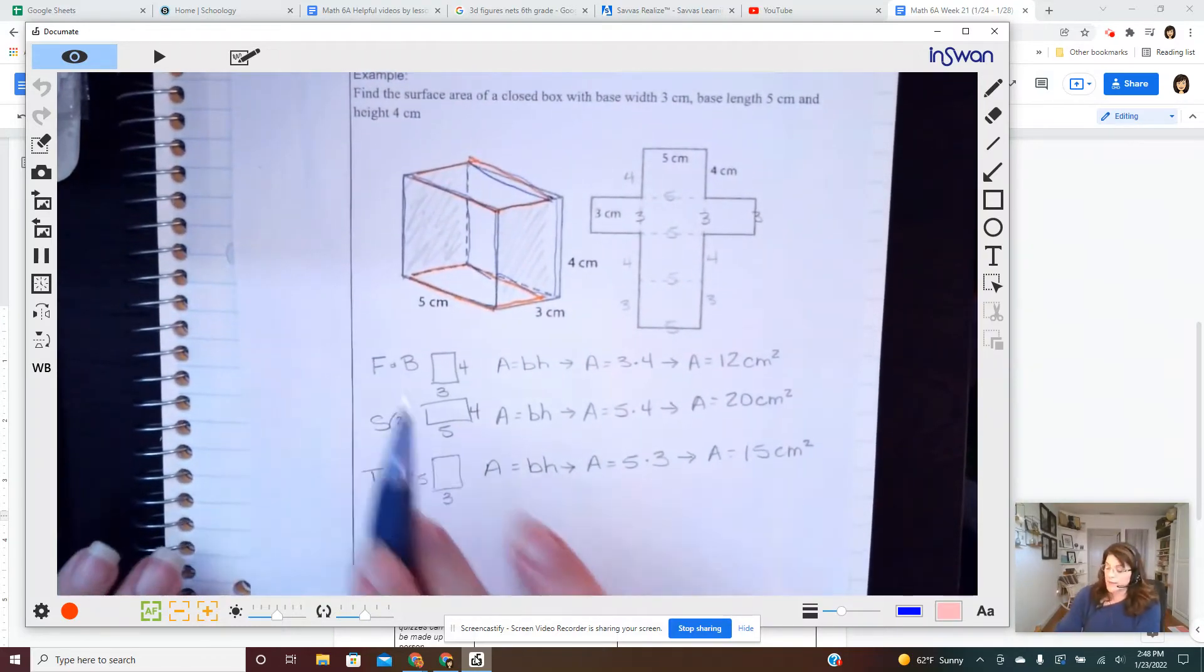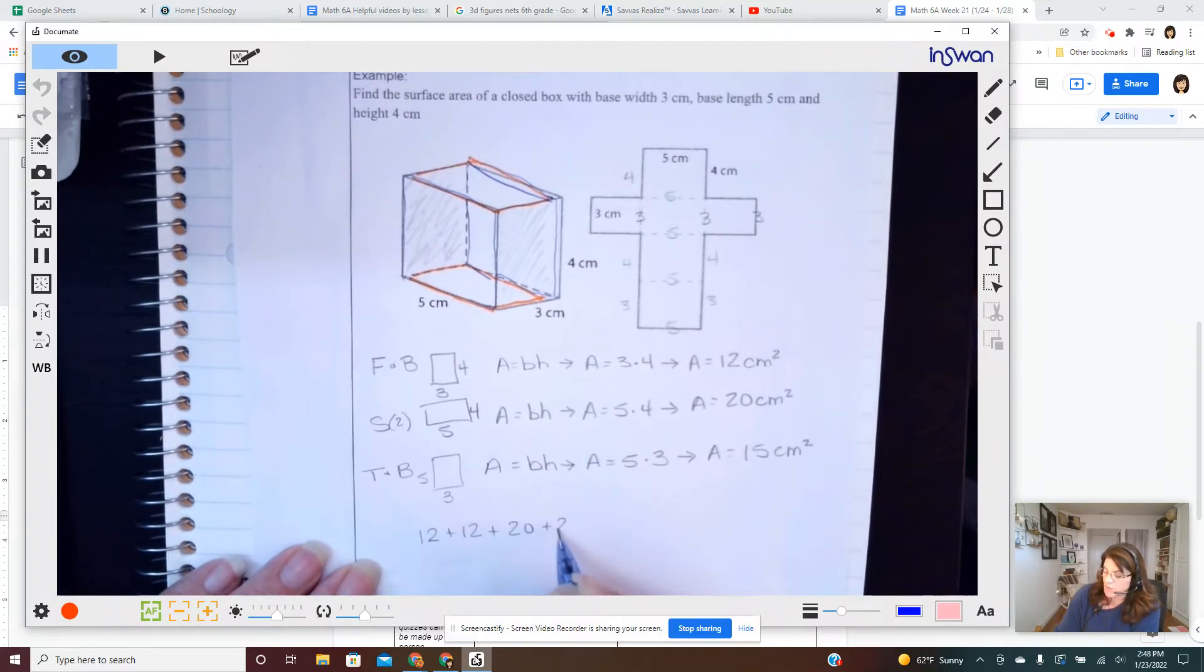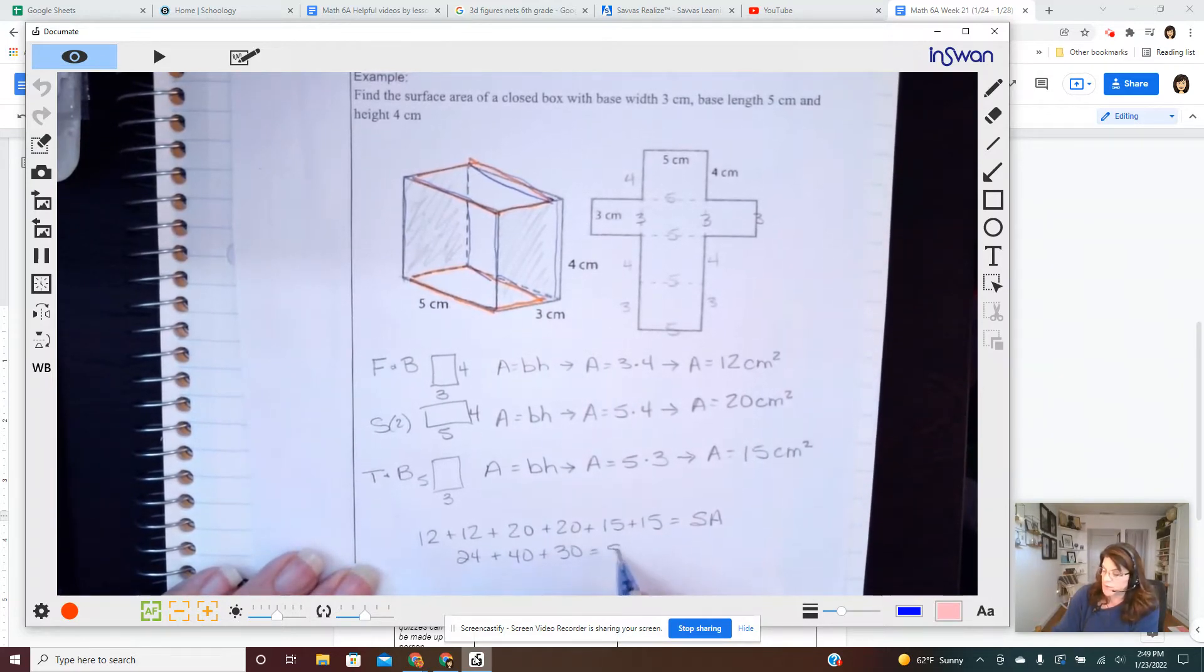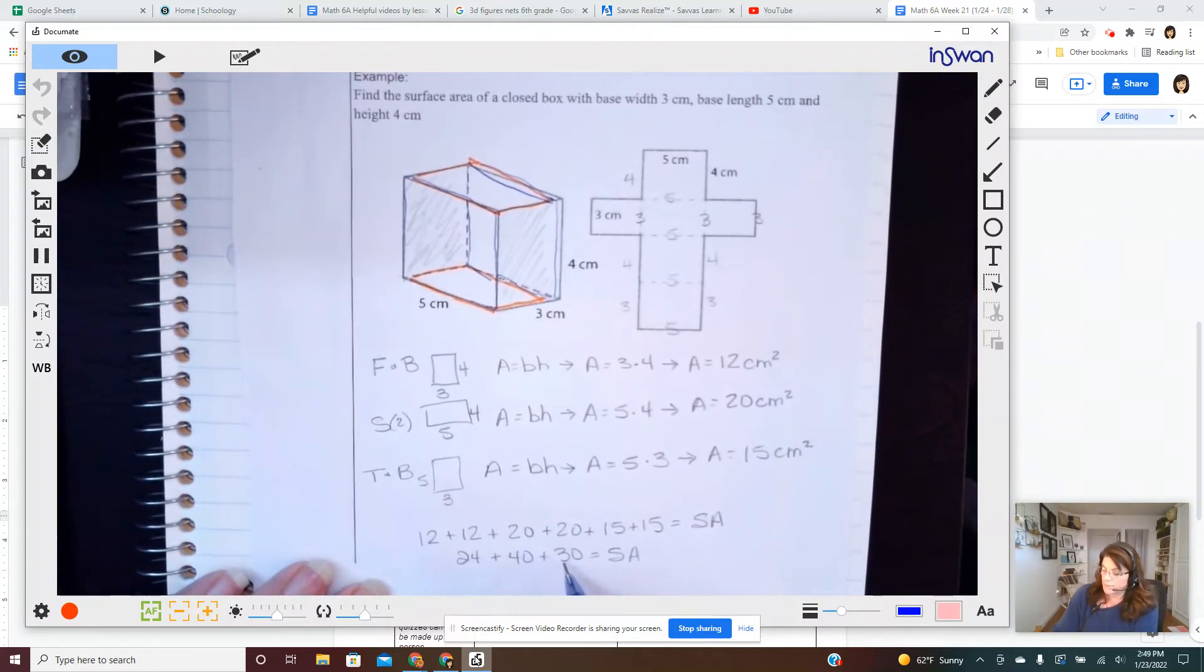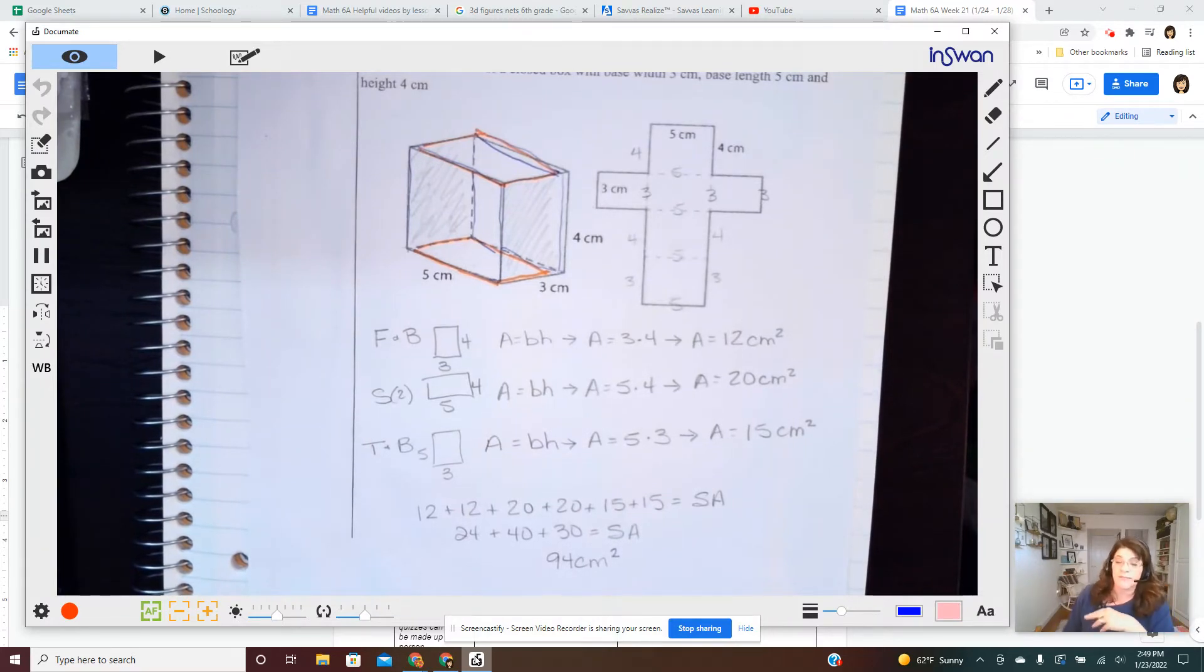Well, now we realize we have two of each of these. 12 plus 12 plus 20 plus 20 plus 15 plus 15 equals surface area. 24 plus 40 plus 34 equals surface area. You're not going to get a lot of these problems. These are the kind of things where a teacher will assign three of them not 13.